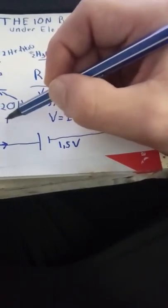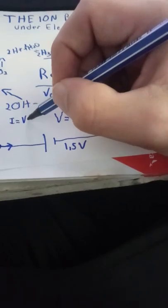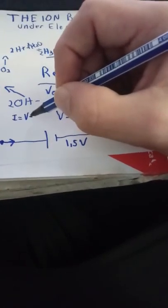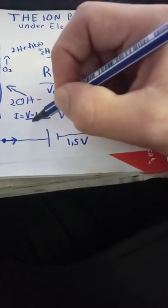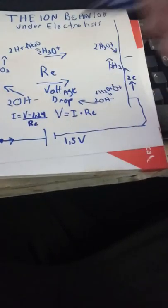That the current is going to be the voltage applied subtracted from 1.24 volts, divided by the resistance.